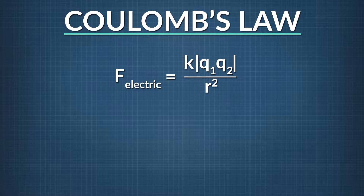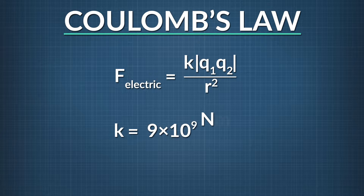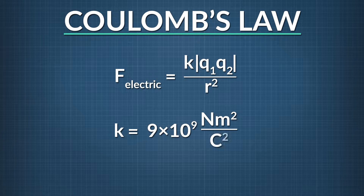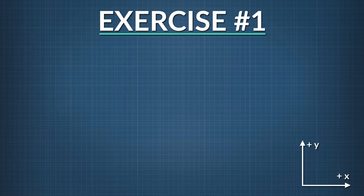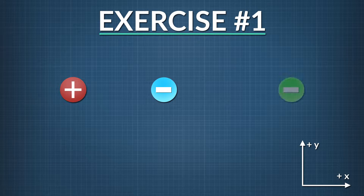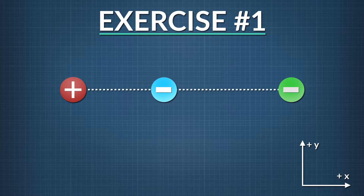The constant k equals 9 times 10 to the ninth newton meters squared per coulomb squared. What if we want to know the electric force on a charge due to multiple other charges? In this example, q1, q2, and q3 are all in a line on the x-axis.